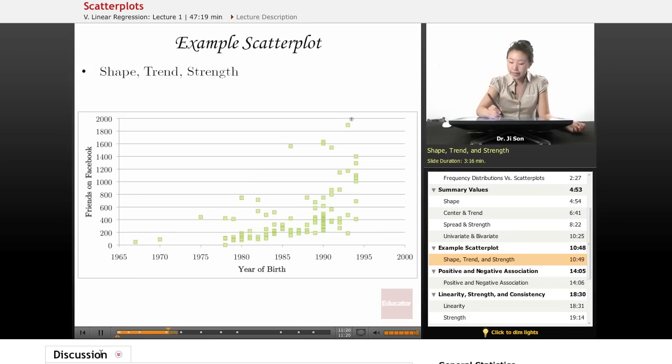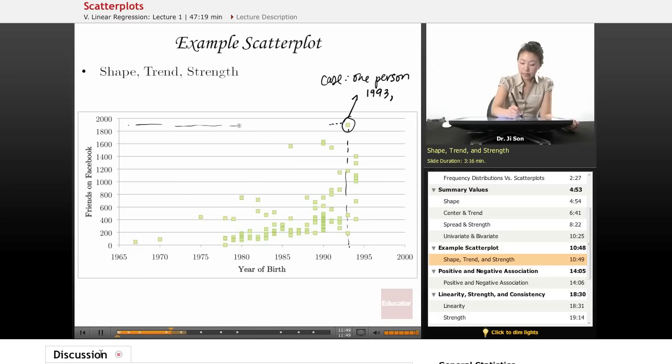It means that this right here, this dot, is actually a particular person, so it's a case of one person. This means that this one person was born maybe in 1993, but they also have an inordinate number of friends, so they have something like 1900 friends.